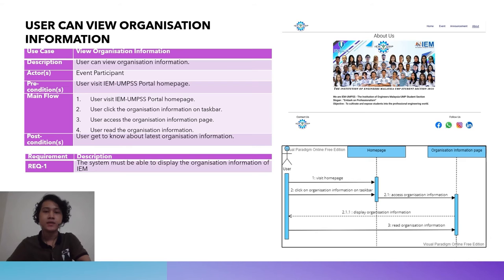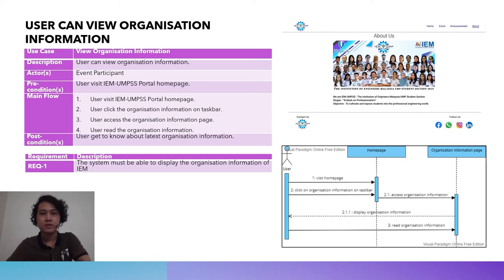The sixth use case is user can view organization information. The functional requirement is that the system must be available to display the organization information of IEM. The sequence diagram is as depicted. The top right shows the user interface for the About Us page.